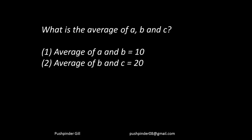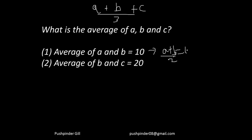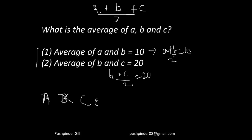Final question: what is the average of A, B, and C? I need A plus B plus C divided by 3. Statement 1 says A plus B divided by 2 equals 10 — not sufficient, so B, C, or E. Statement 2 says B plus C divided by 2 equals 20 — not sufficient alone, eliminate B. Now combine: I know A plus B and B plus C — two equations but three variables. Even algebraically I can't find the answer. So my answer is E.